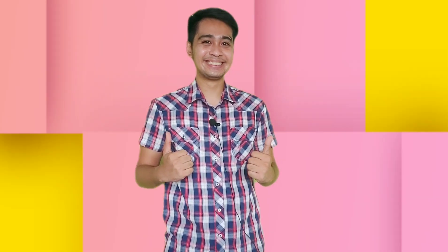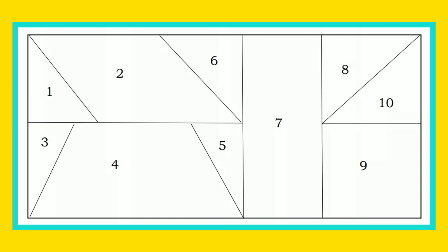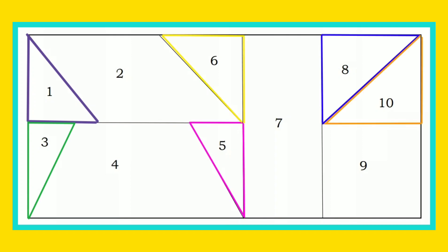Good job, kids. How about this last activity? Using the drawing below, write whether the figure labeled by each number is a triangle or a quadrilateral. Write the correct answer on a sheet of paper. The triangles are one, three, five, six, eight, and ten.